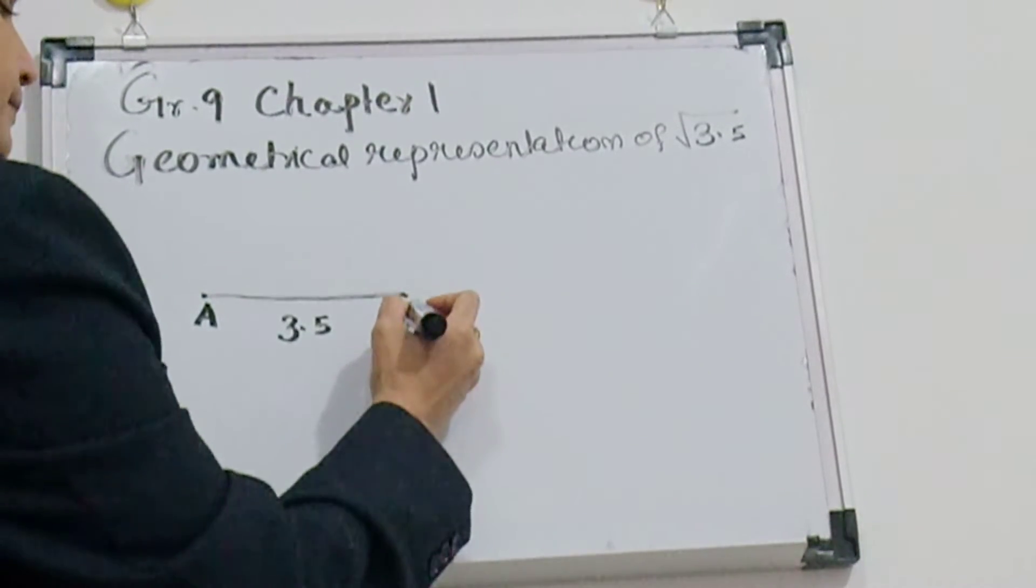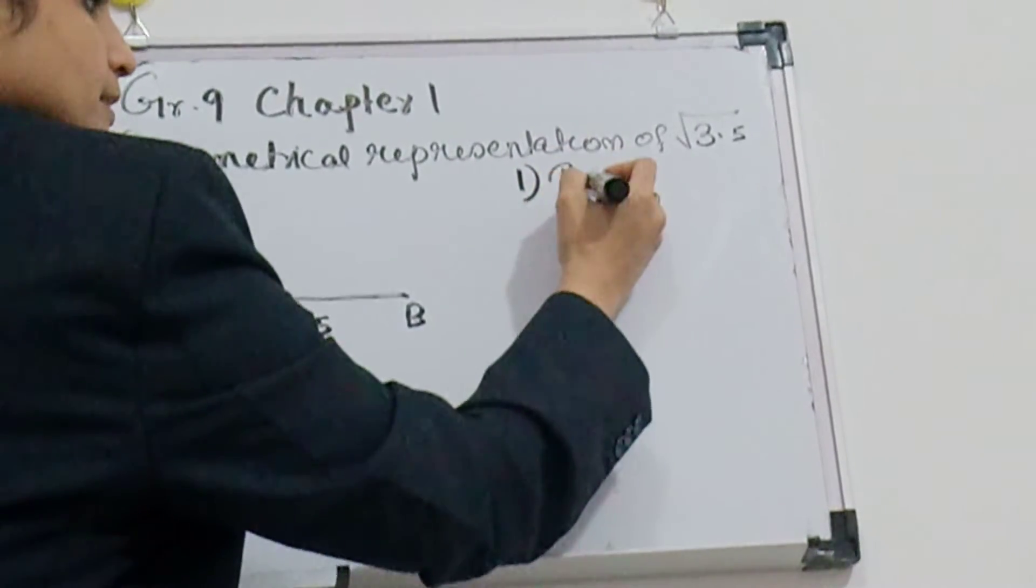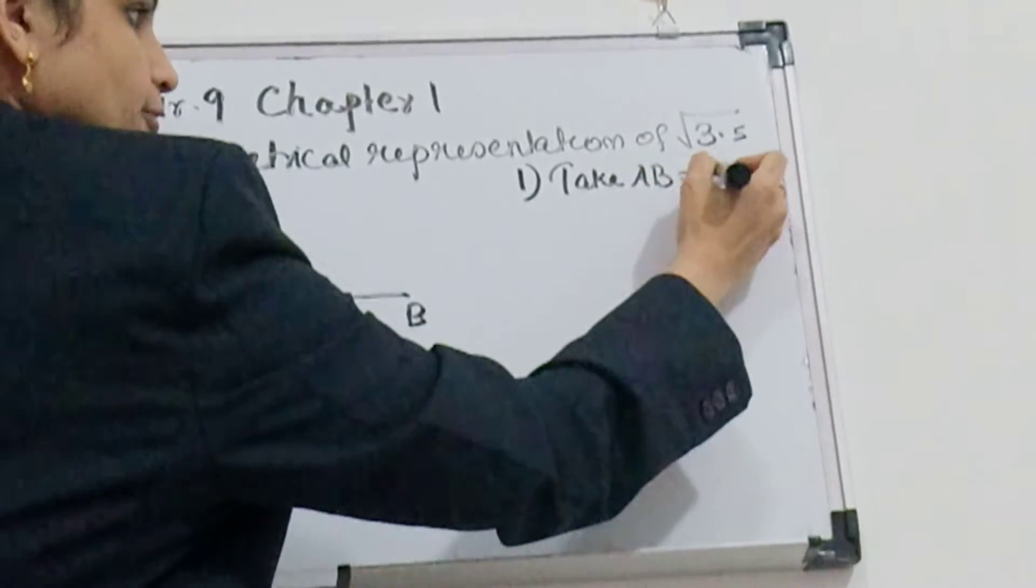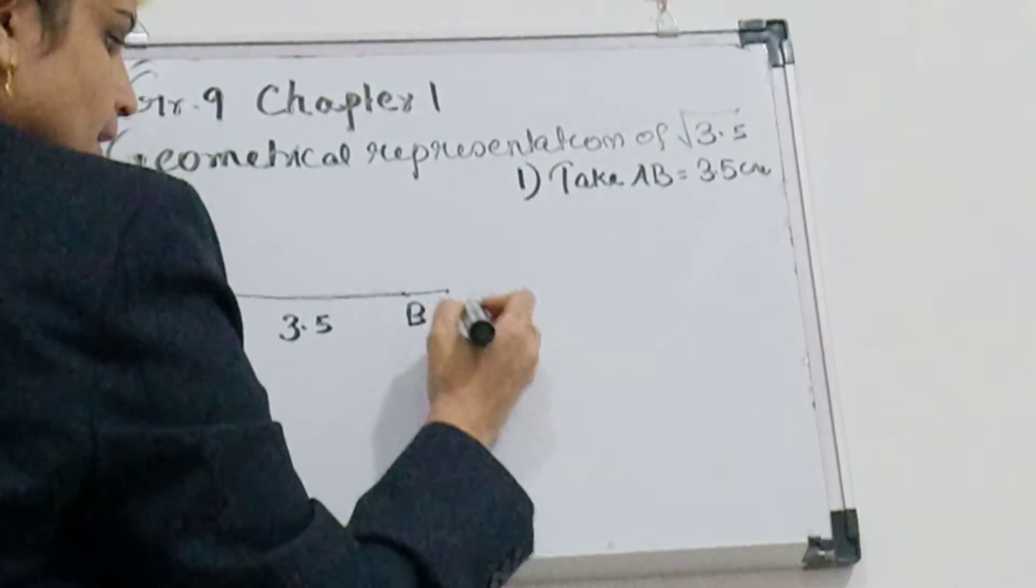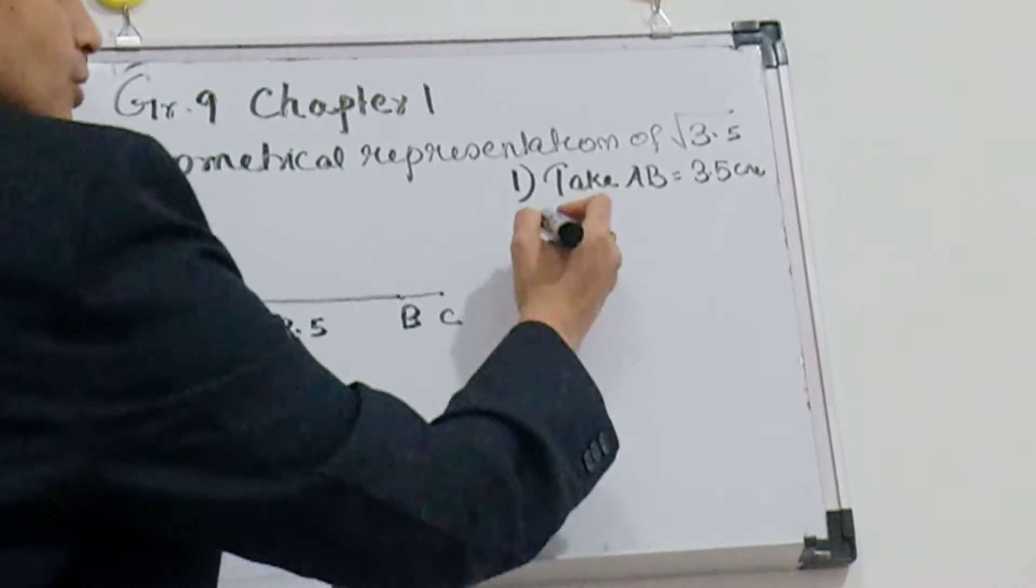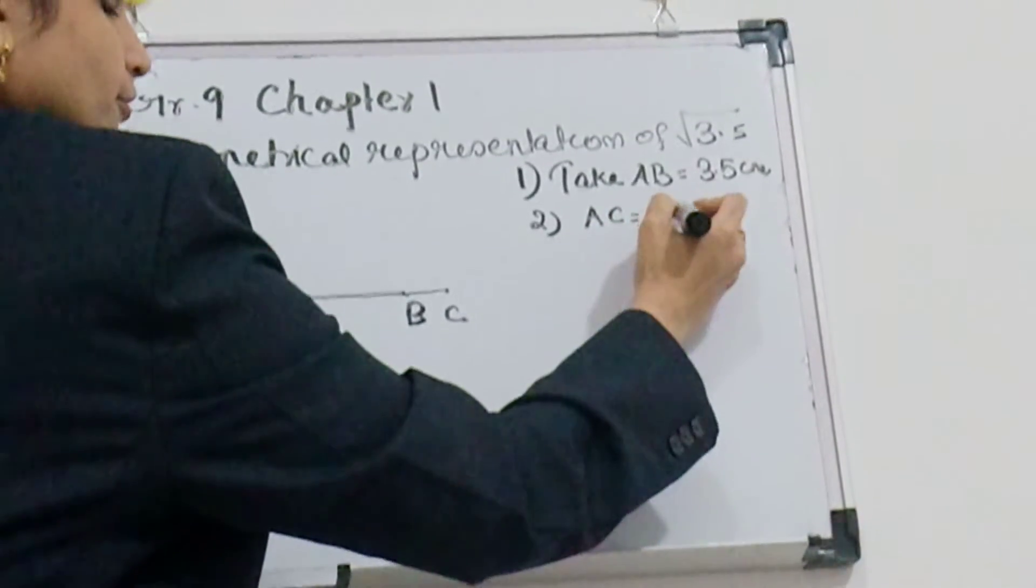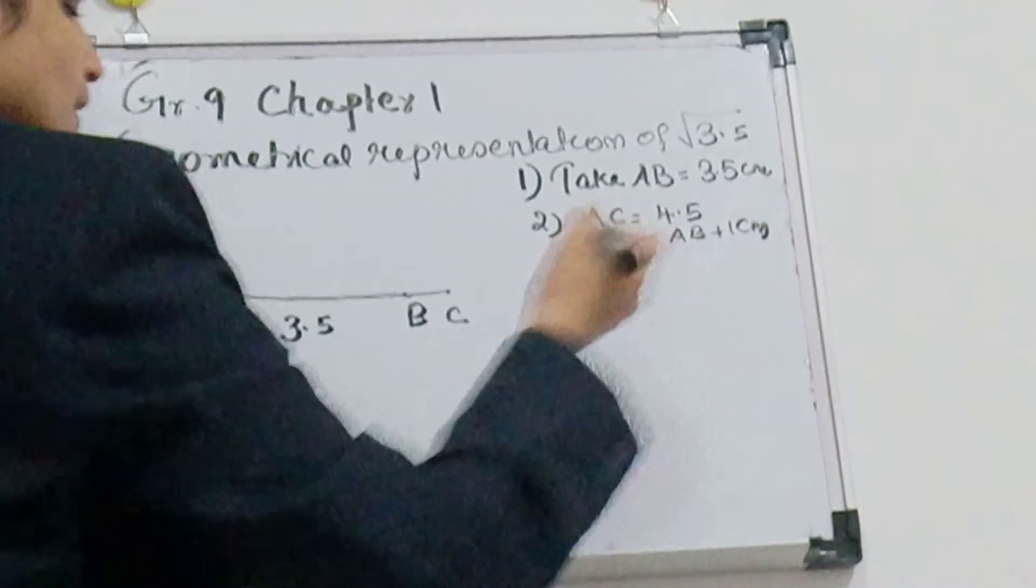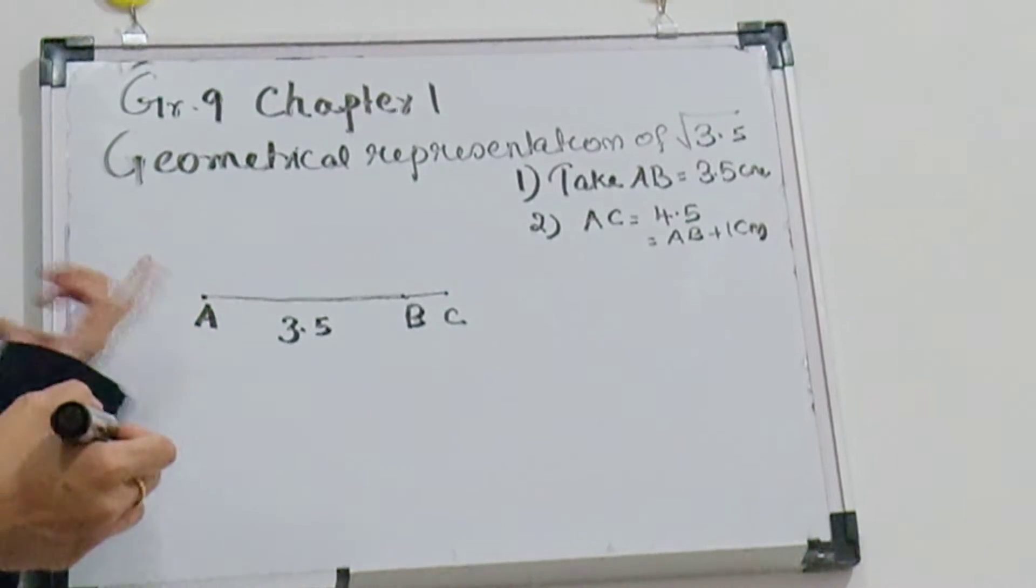So first step is Step 1: take AB equal to 3.5 centimeter and extend 1 centimeter and mark it as BC. So step 2 is AC equal to 4.5, that is AB plus 1 centimeter. Now you use compass to draw a semicircle.